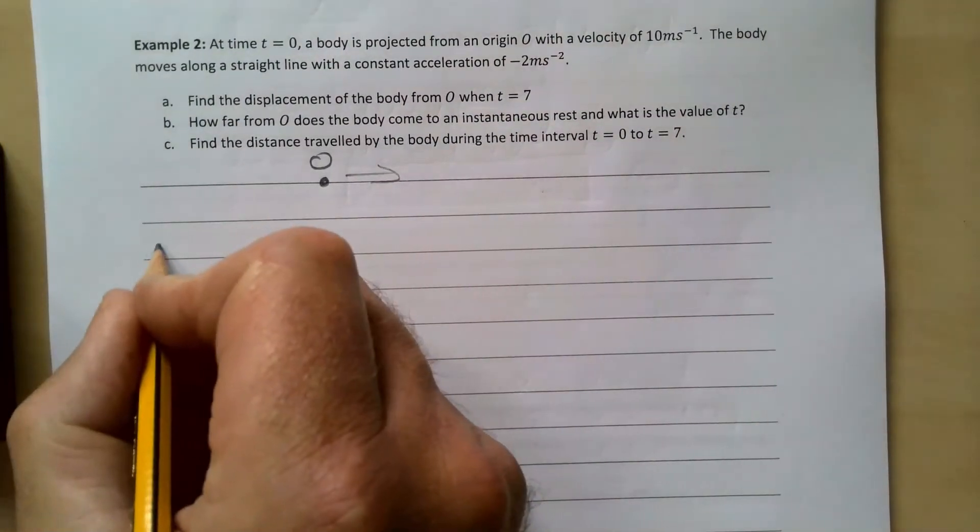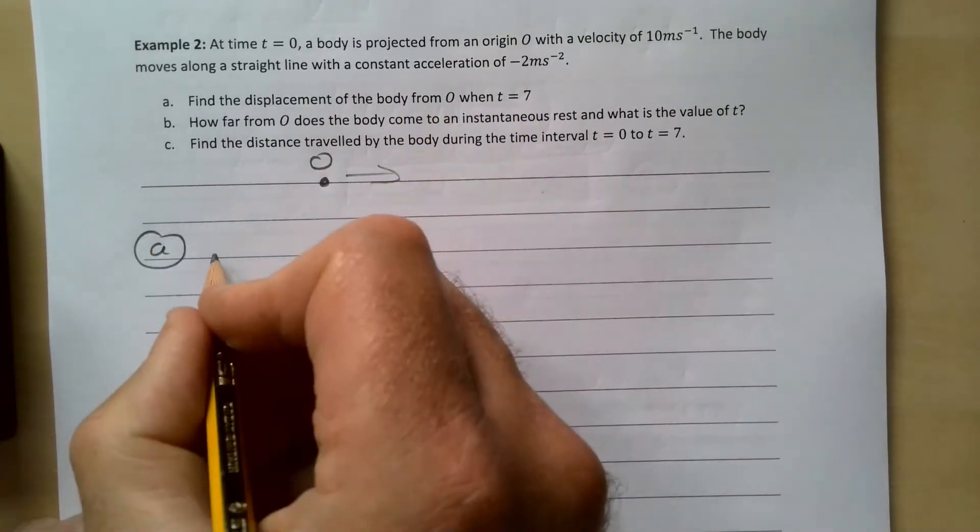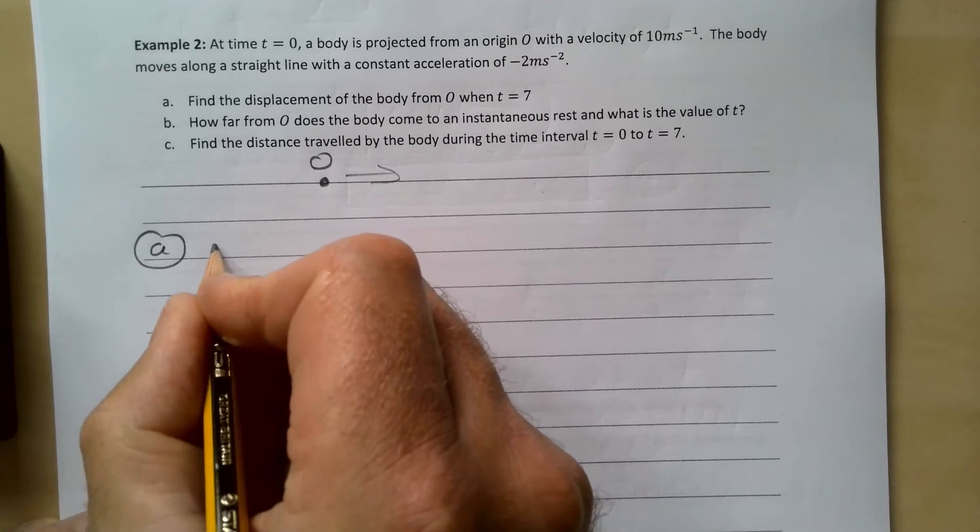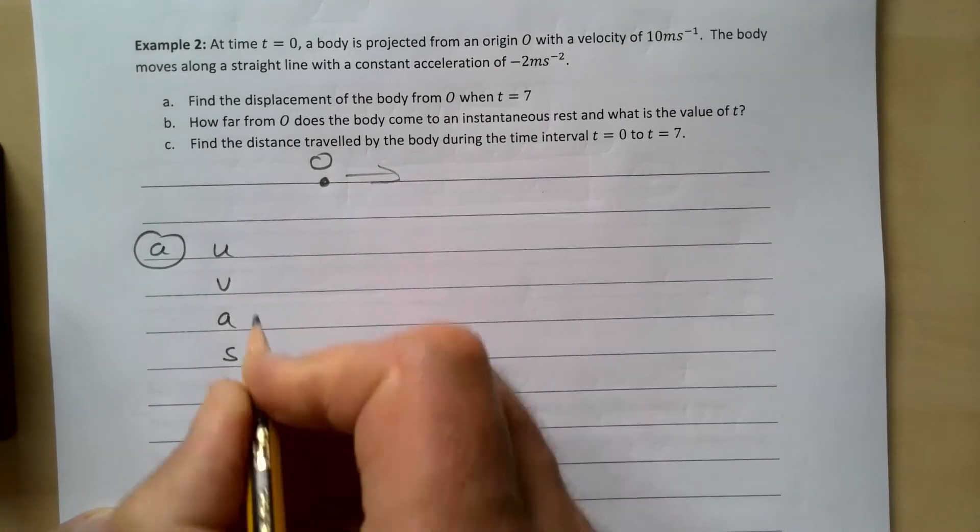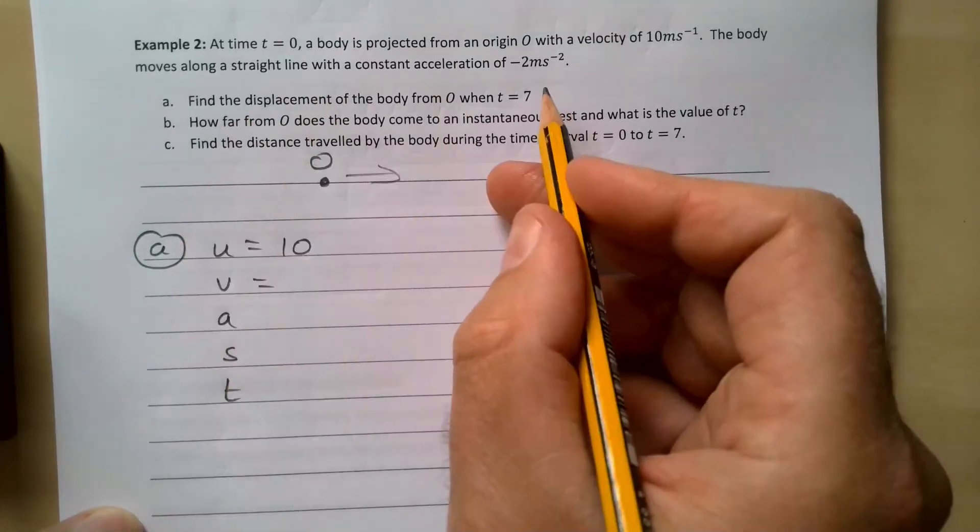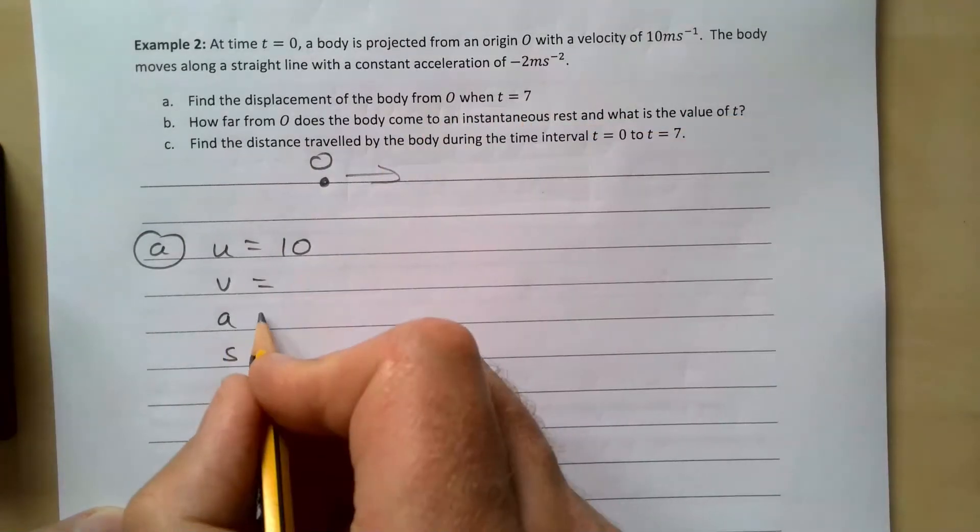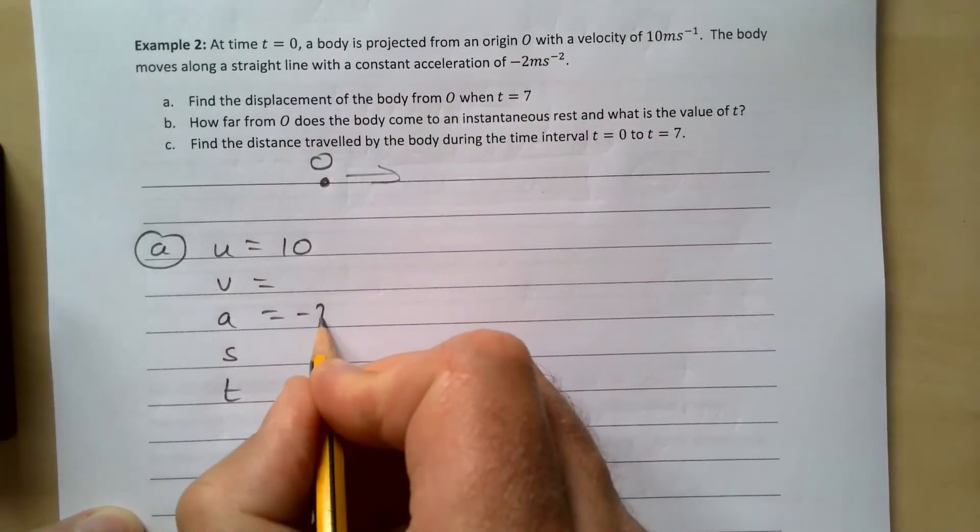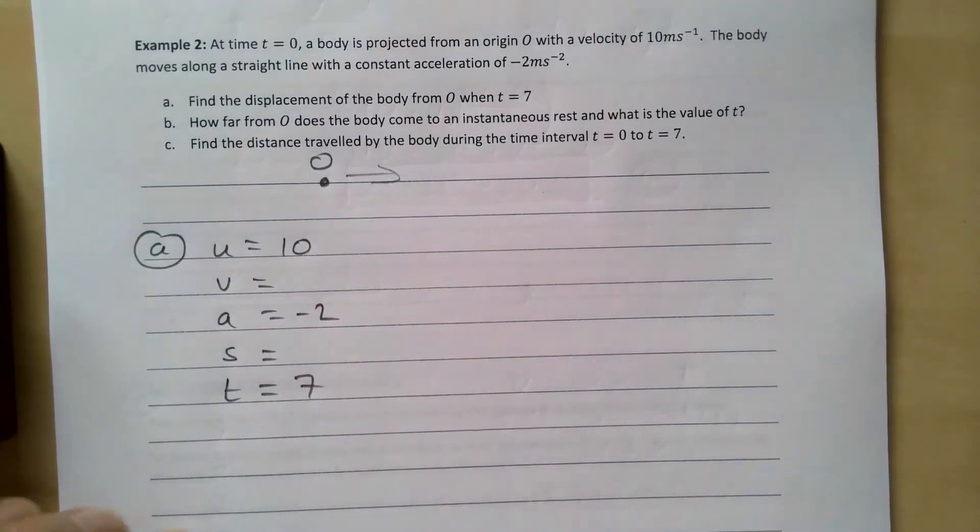So let's go for part a, find the displacement when t is seven. See if we can see what three pieces of information we know here. So we have u, v, a, s, and t. u is 10, v we don't know because we don't know its final velocity when t equals seven. Acceleration is minus two and t equals seven.